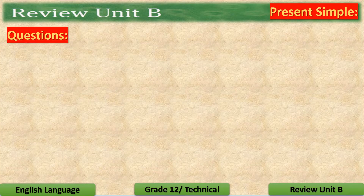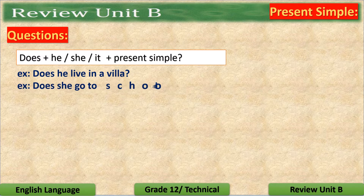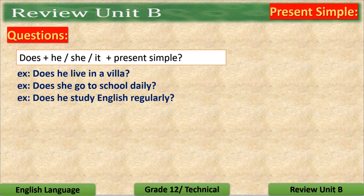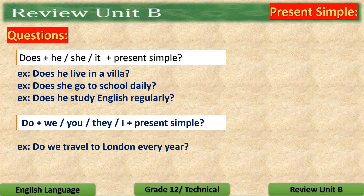To form questions, we follow the following rules. With singular, we start with does — helping verb plus singular subject plus the base form of the verb. Like: Does he live in a villa? Does he go to school daily? And does he study English regularly? While with plural subjects or I, we use do — do plus subject plus the base form. Like: Do we travel to London every year? Do I pray five times a day?